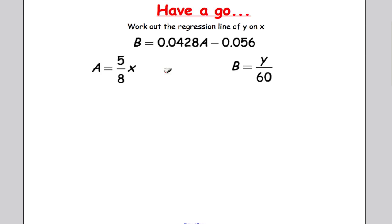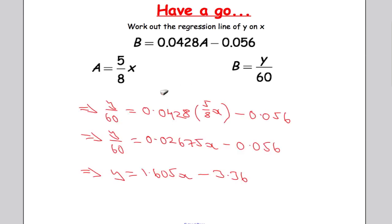Okay hopefully you've managed that one. Here is the solution. Fairly straightforward. Wherever you have an a in your formula substitute 5 over 8x. Wherever you've got a b substitute y over 60. And then you solve and get it in terms of y.